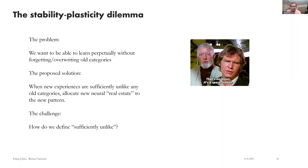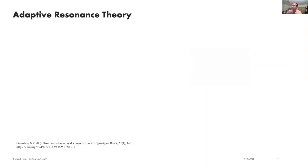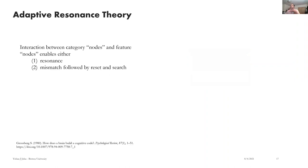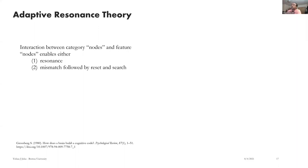So adaptive resonance theory — what is it all about? The key idea is interaction between category nodes — ensemble groups that are implicit learned categories, not labeled. We're doing unsupervised learning. And feature nodes are the inputs. Two things can happen when you have this interaction: you can have resonance, or a mismatch followed by reset and search. Resonance means the features — which could be various low-level parts of the face if categorizing faces, or specific notes and timbre if learning implicit categorization of chords — and the category node mutually stabilize. The implicit internal category node reinforces — or rather, stabilizes — the feature representation.